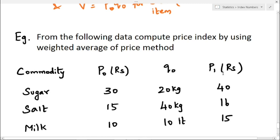P1 is the current year value. The base year sugar value is 30 rupees and the current year sugar value is 40 rupees. Base year salt is 15 rupees and current year salt is 16 rupees. Base year milk price is 10 rupees and current year milk price is 15 rupees. The quantity values Q0 are: sugar 20 kg, salt 40 kg, and milk 10 liters.